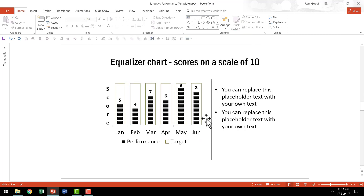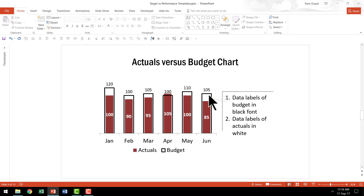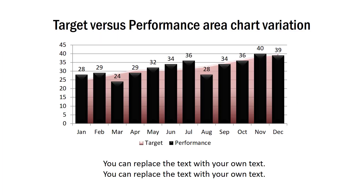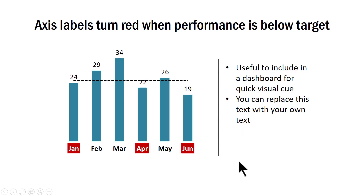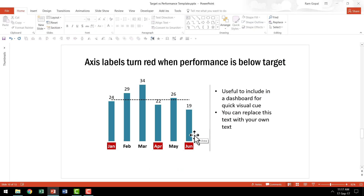Now I'm going to show you a variation: the targets are different in each of these cases and the performance is shown using a red column. This is another way in which you can show actual versus budget. This one is a variation of the earlier chart where we have varying targets shown as an area chart in the background and then the actual performance is shown using the columns. This one is an advanced version: the beauty of this particular chart is if the performance is below the target, you will have these labels shown in a different background.